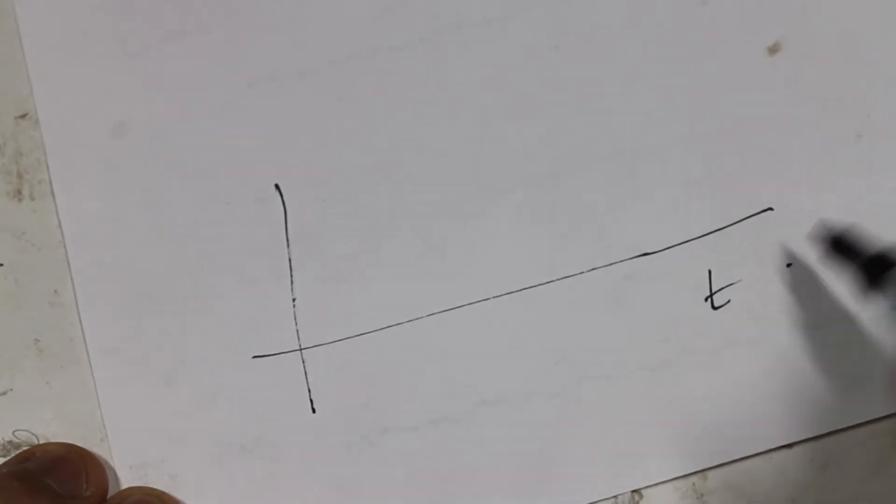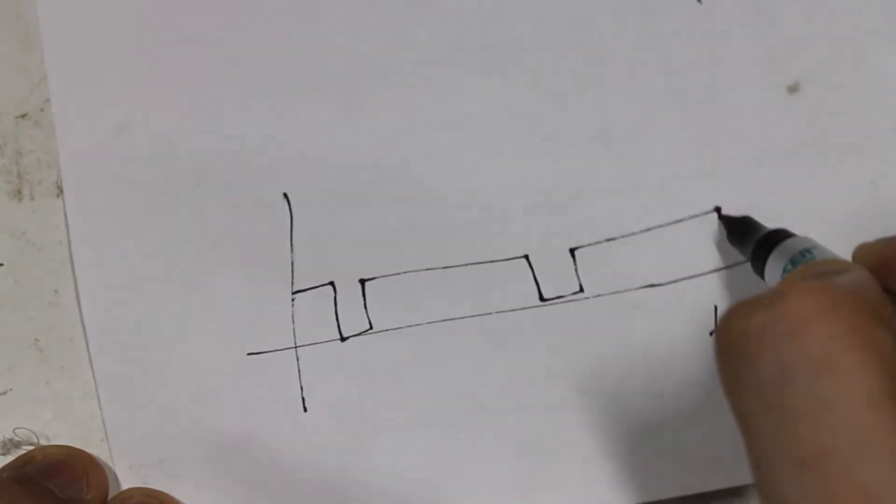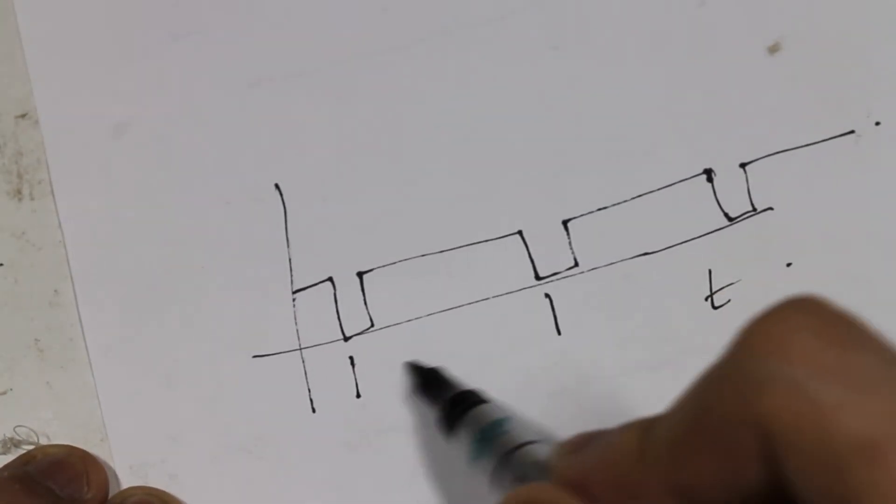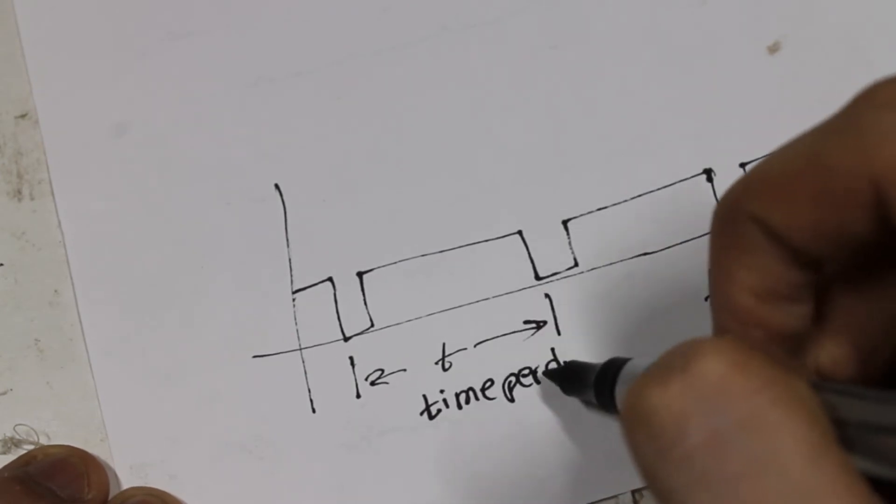This is the square wave that we got as an output. The time difference between two crests of the square wave is the time period of the shaft's revolution.